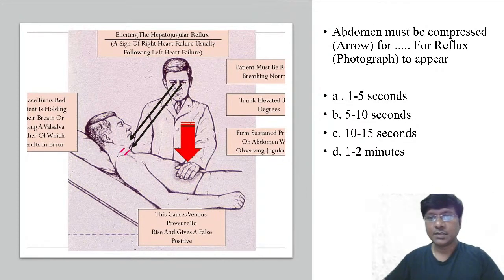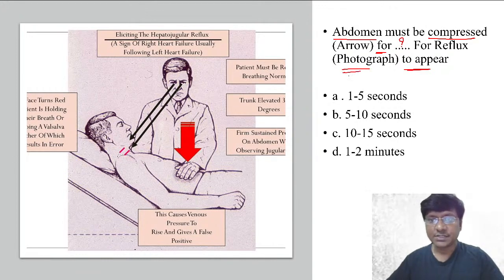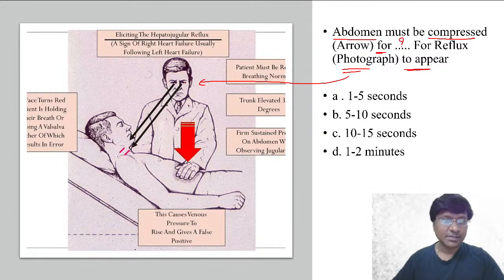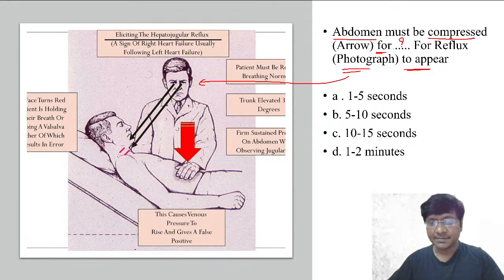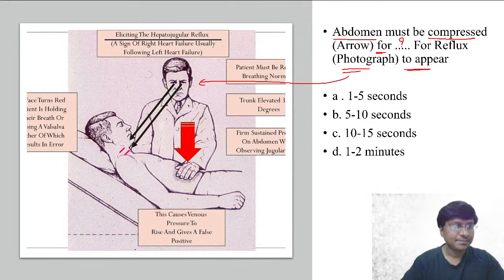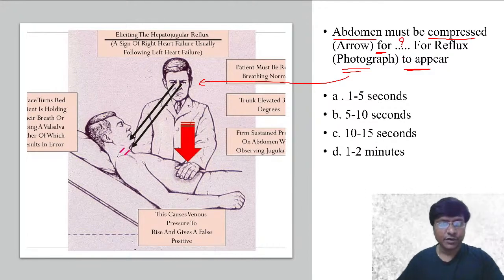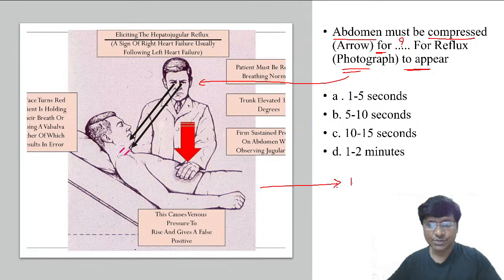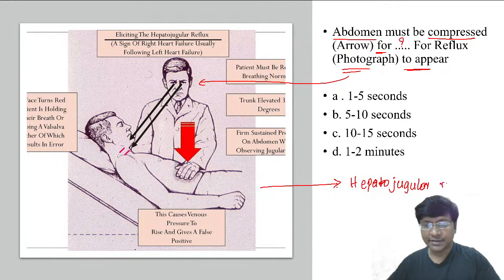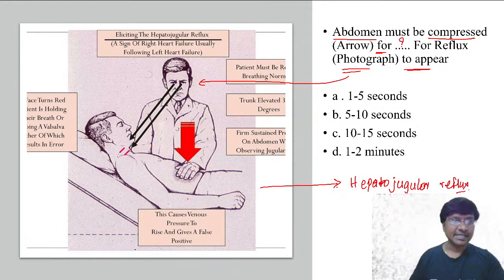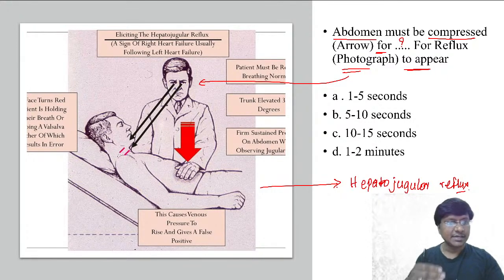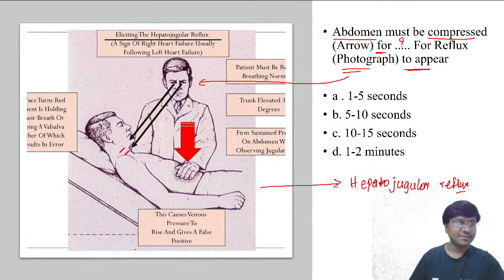The next question: the abdomen must be compressed for how much duration for the reflex to appear? Options: (A) 1 to 5 seconds, (B) 5 to 10 seconds, (C) 10 to 15 seconds, (D) 1 to 2 minutes. Looking at the image, the physician is observing the neck while compressing over the abdomen — this is the hepatojugular reflex. One mistake in the image is that he should be compressing from the right side of the patient, not the left side.